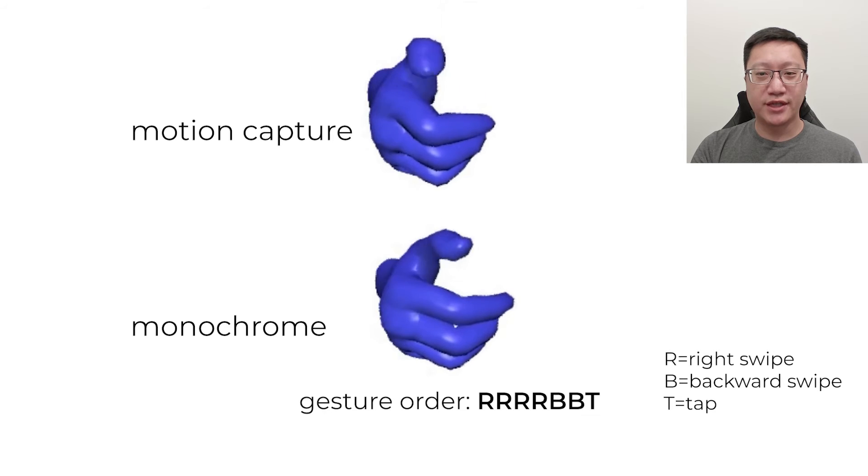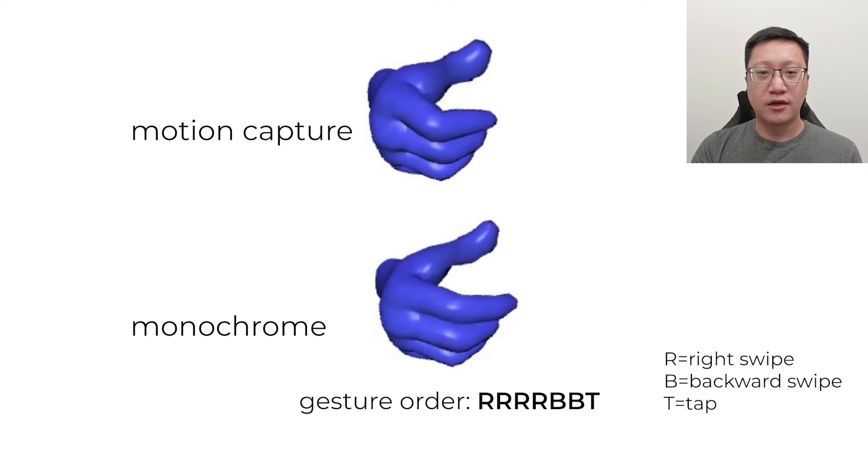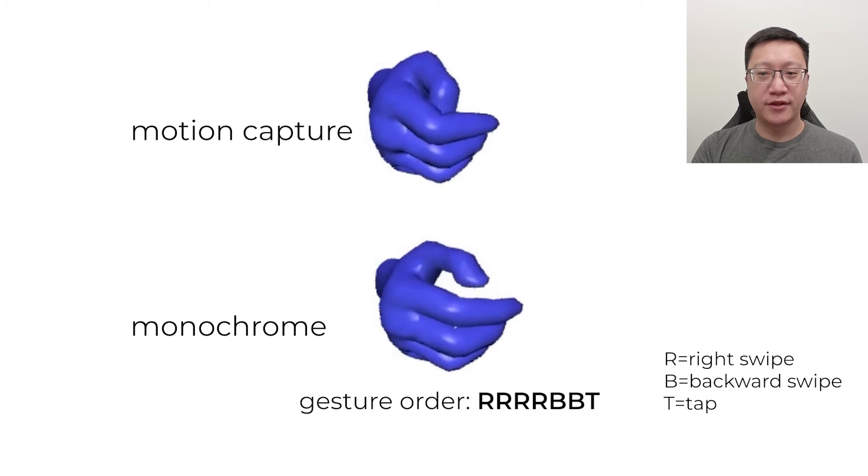Next, an example sequence. This example sequence is a sequence of four right swipes, followed by two backward swipes, then ending with a tap.